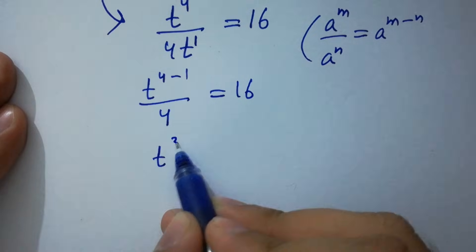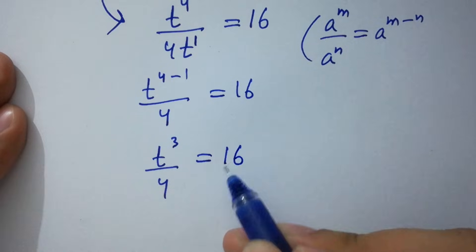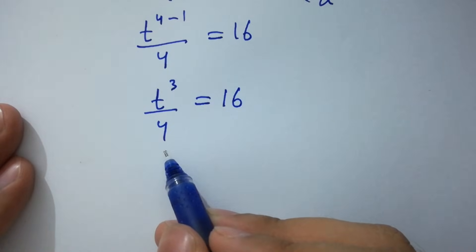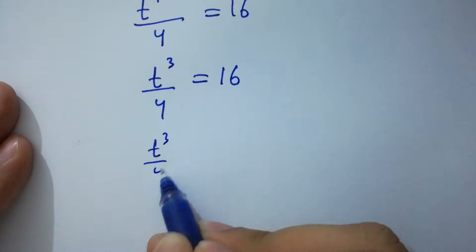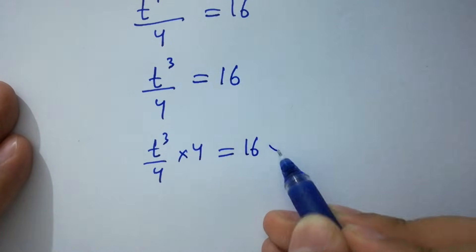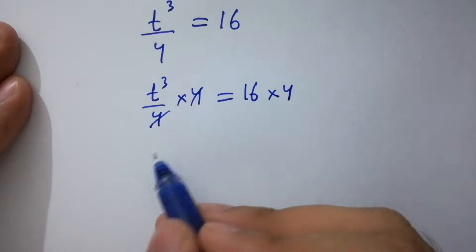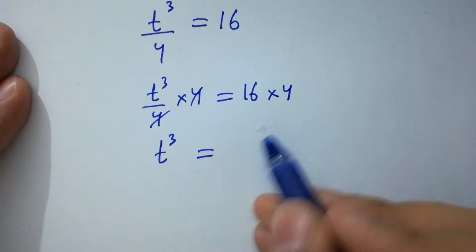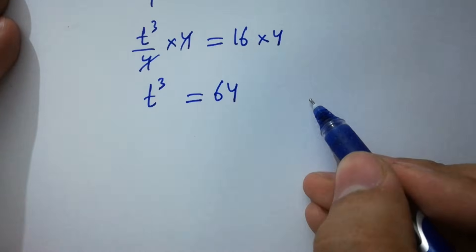It will be t to the power 4 minus 1 over 4 equals 16. t to the power 3 over 4 equals 16. To cancel the 4, multiply by 4 on both sides. 4 and 4 cancel, we get t cubed equals 16 times 4, which is 64. And 64 is 4 cubed.